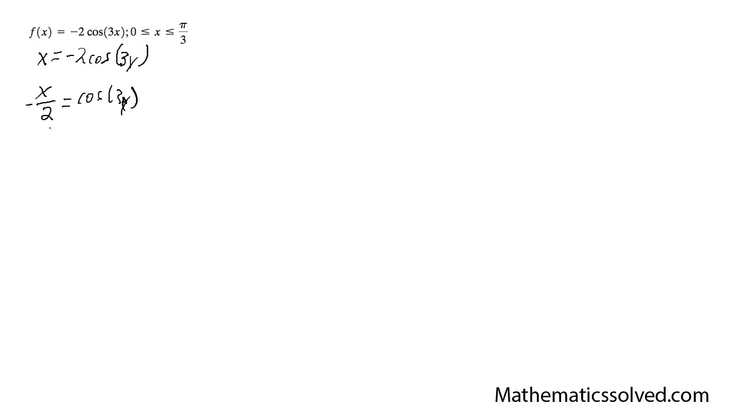And take the inverse cosine, so I'm going to get 3y equals inverse cosine of negative x over 2. Even though cosine is an even function, you've got to leave the negative sign in there in this case.